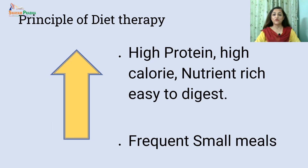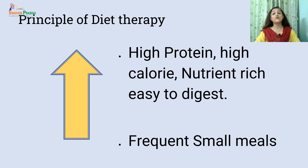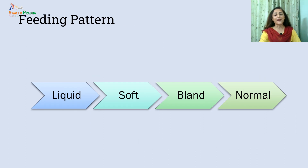In all types of fever, the basic principle is to provide a high protein, high energy, nutrient-dense diet. Extra care should be taken to ensure the diet is easy to digest. Frequent small meals are recommended so that ample rest is ensured for the affected part of the body. The feeding pattern should start from liquid diet, then shift to soft diet, followed by bland diet, until the person is able to take a normal nutritious diet.